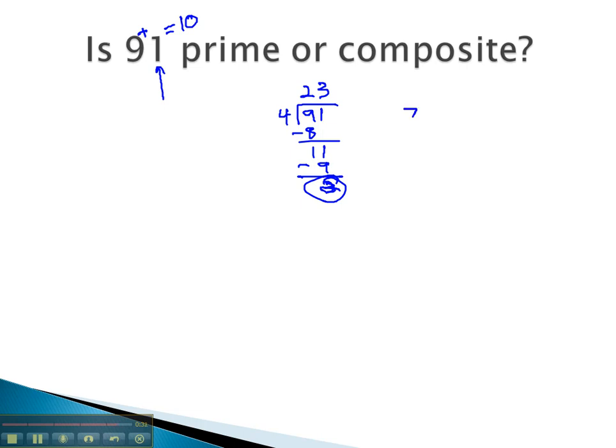How about 7? 7 goes into 91. Well, 7 goes into 9 once, leaving behind 21. And 7 goes into 21 three times, leaving behind 0. No remainder.